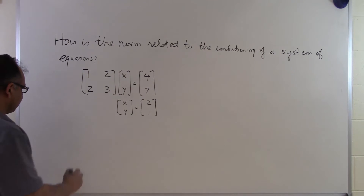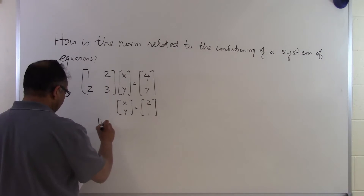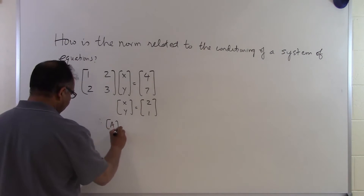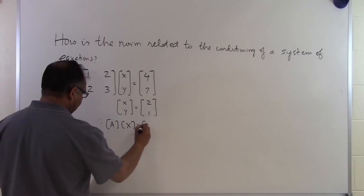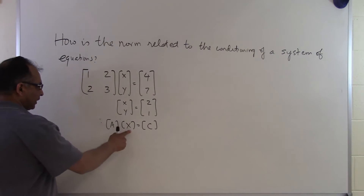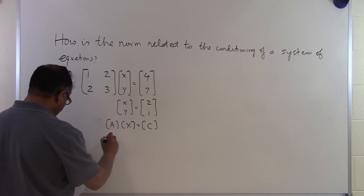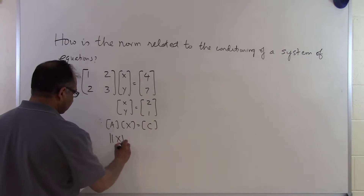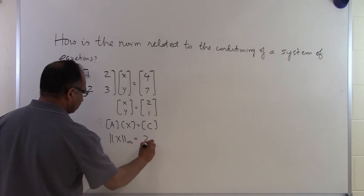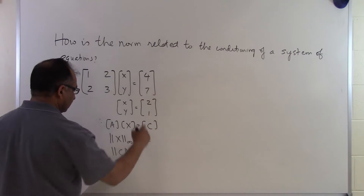If we consider the above set of equations to be of the form AX equal to C, where A is the coefficient matrix, X is the solution vector, and C is the right-hand side, then we can see that the norm of X in this case will be 2 and the norm of C in this case will be 7.